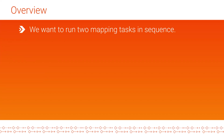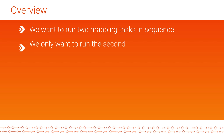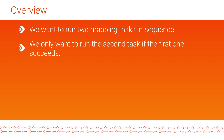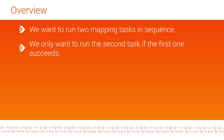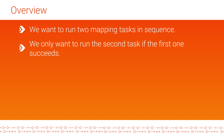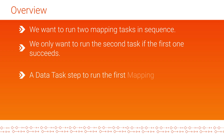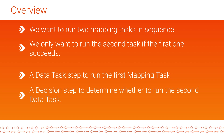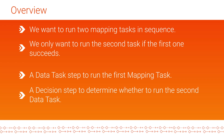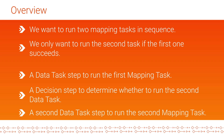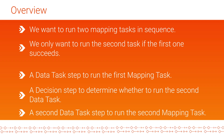In today's example, we want to run two mapping tasks in sequence, but we only want to run the second task if the first one succeeds. We'll create a Taskflow that includes the following steps: a Data Task to run the first mapping task, a Decision step to determine whether to run the second task, and a second Data Task step to run the second mapping task.